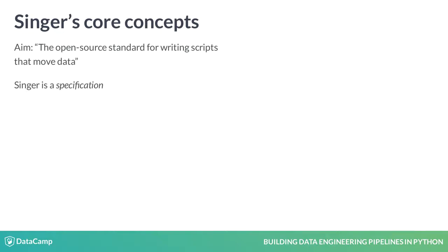At its core, Singer is a specification that describes how data extraction scripts and data loading scripts should communicate using a standard JSON-based format over standard out. JSON is similar to Python dictionaries, and standard out is a standardized location to which programs write their output.